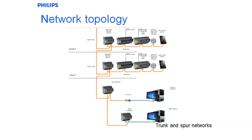These devices, as well as giving message translation between Dinette 1 and Dinette 2, also give us optical isolation. So if we have a major catastrophic fault on one spur on a particular level, it is not going to take out the entire building. It will only take out the network on that one segment.